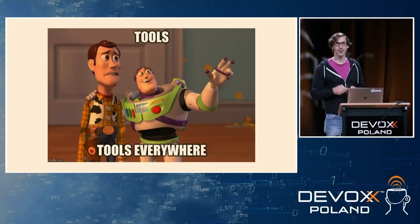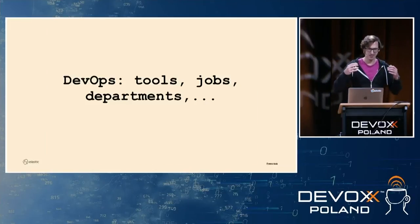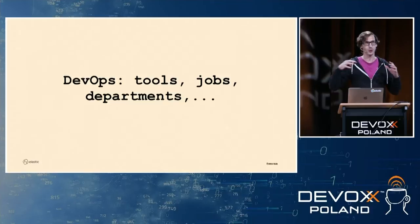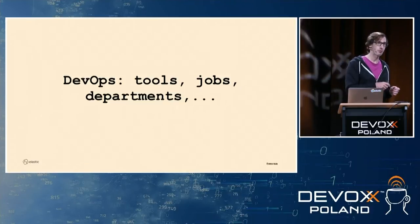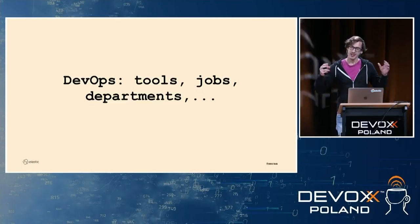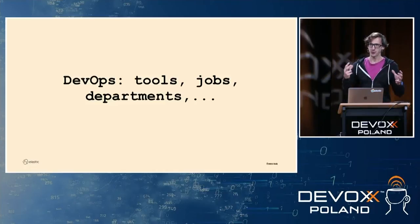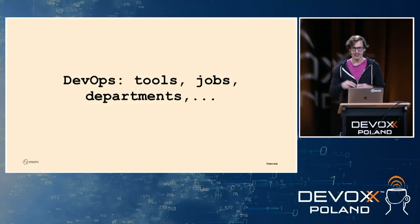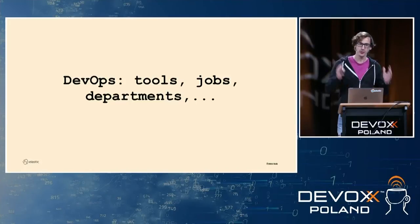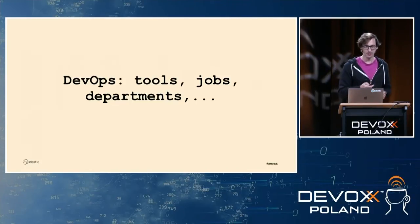The idea of DevOps was to break down silos — not dev throwing something over the fence to ops saying 'good luck, it's your problem now.' But it became tools, jobs, departments, and other things, which was not the idea. There are reasons for that: if you call yourself a systems engineer in the US that's one salary range, but replace your title with DevOps and you earn 19% more. So that's why companies say we should do DevOps.